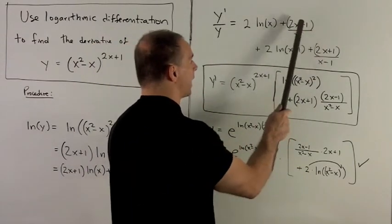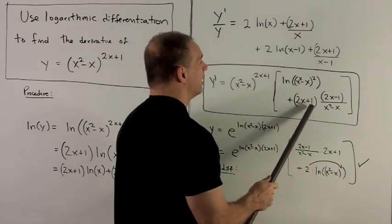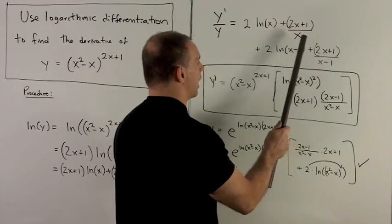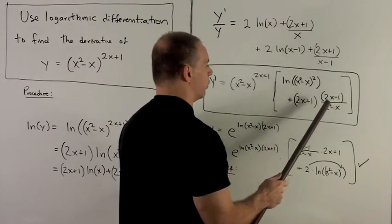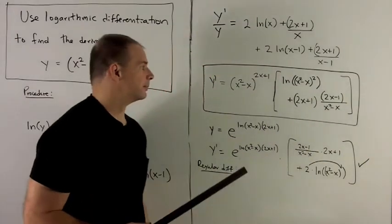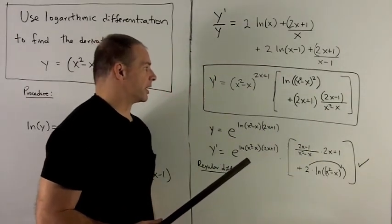For the other two terms, I can factor out the 2x plus 1. And then all I have to do is put things over a common denominator. And when I do that, that's going to give me 2x minus 1 over x squared minus x. So that's where I'm going to stop with this.